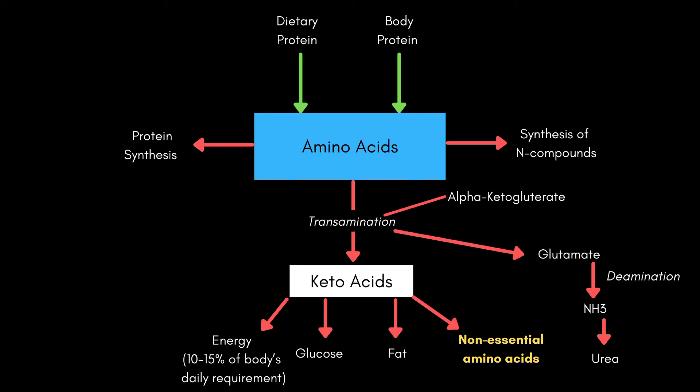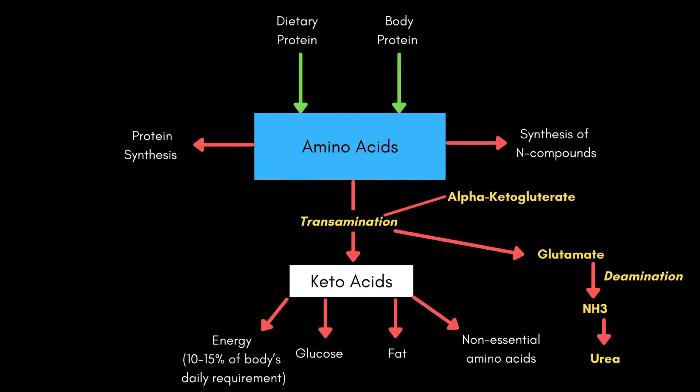The last pathway of protein loss is the synthesis of non-essential amino acids. The body can produce non-essential amino acids from glucose, but since amino acids contain nitrogen, the body needs to draw amino acids from the amino acid pool to provide the nitrogen required to generate new non-essential amino acids.